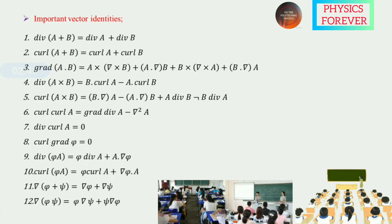Curl of (A cross B) equals (B dot del)A minus (A dot del)B plus A(divergence B) minus B(divergence A). Curl curl A equals gradient(divergence A) minus del-squared A — this is most important.